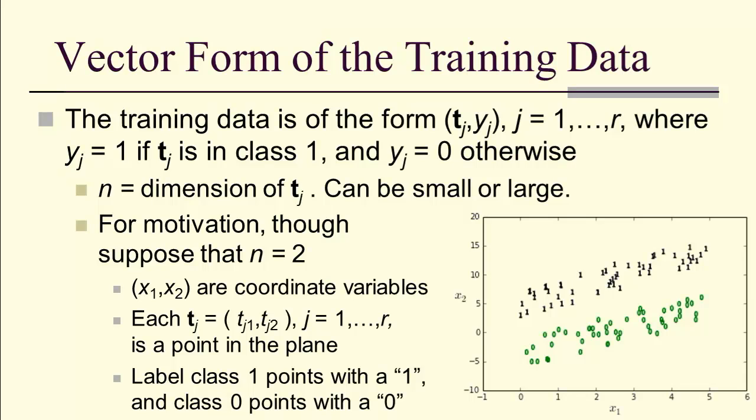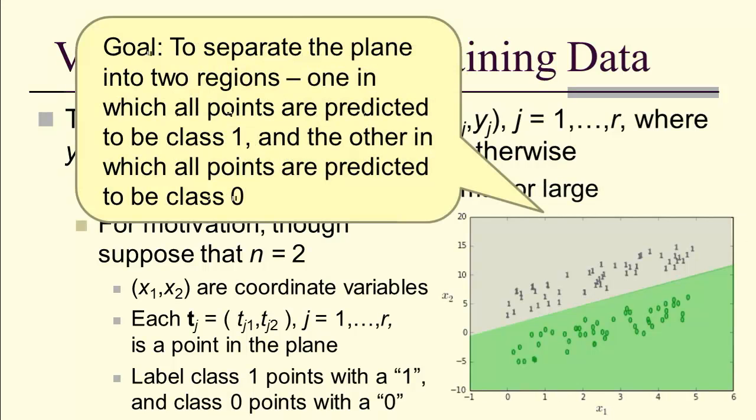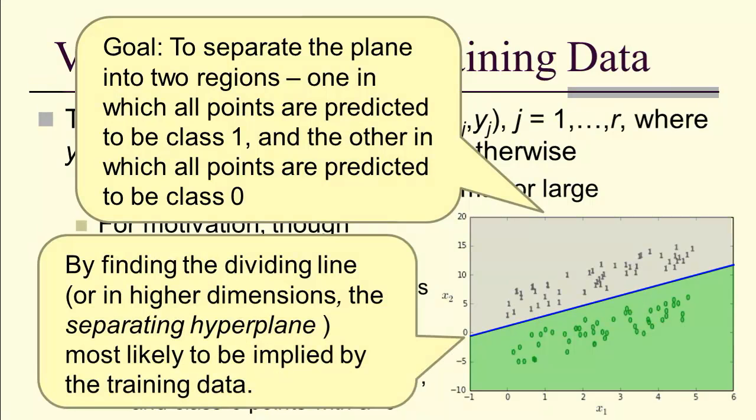Each T is just a point in the plane, so the vector bold T_j is a point. The 1s correspond to points in class 1 and the 0s in class 0. Our goal is to separate the plane into two regions, one where all points are predicted class 1 and the other class 0. We can do that if we can find a separating hyperplane, which is just a line in our two-dimensional example.